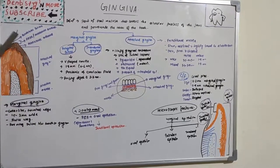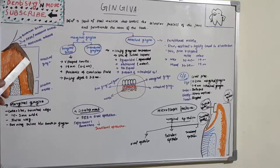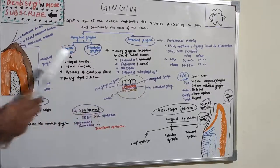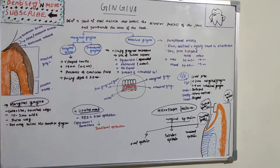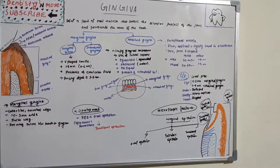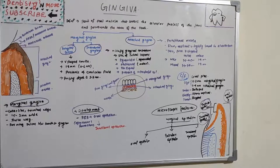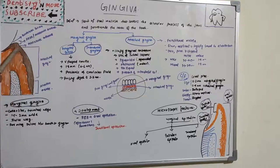Here we can see the gingiva and alveolar bone. The attached gingiva extends from one region to another. This is alveolar mucosa. The same picture is shown here from a frontal view and a side view, showing alveolar mucosa, attached gingiva, free gingiva, and the gingival sulcus or crevicular area. They are separated by the free gingival groove. From the attached gingiva to the lower part is alveolar mucosa.